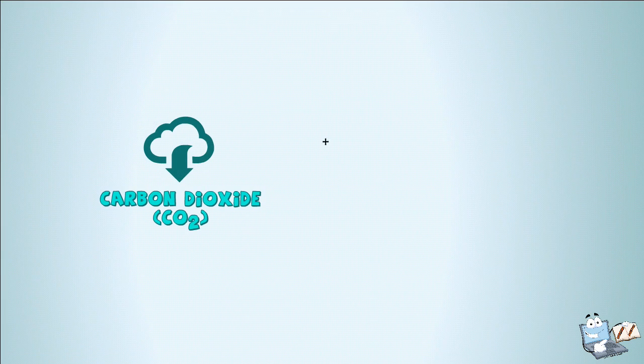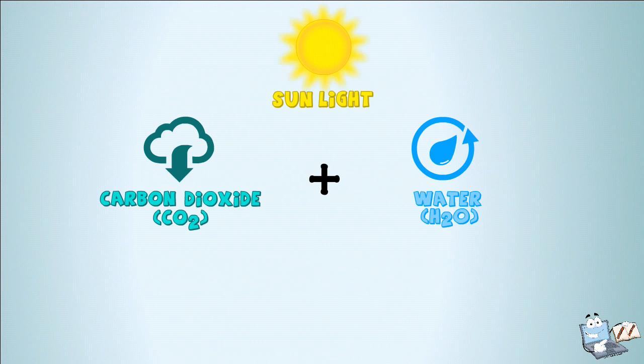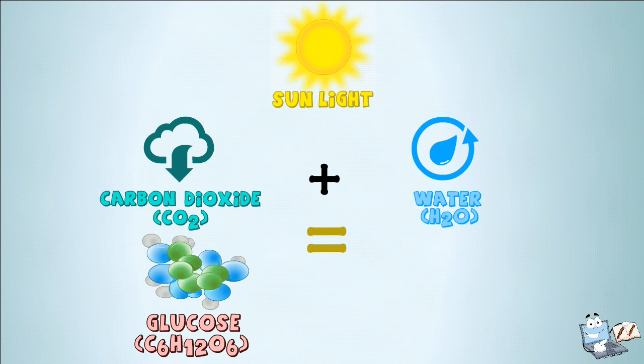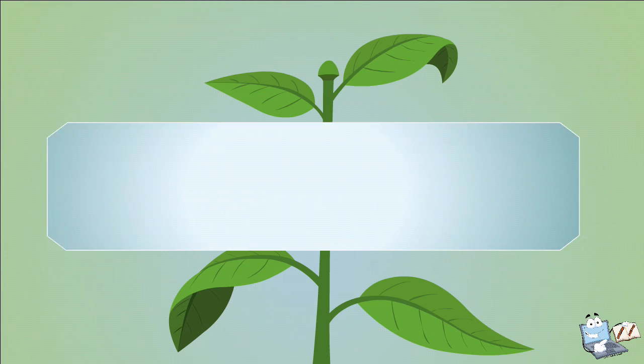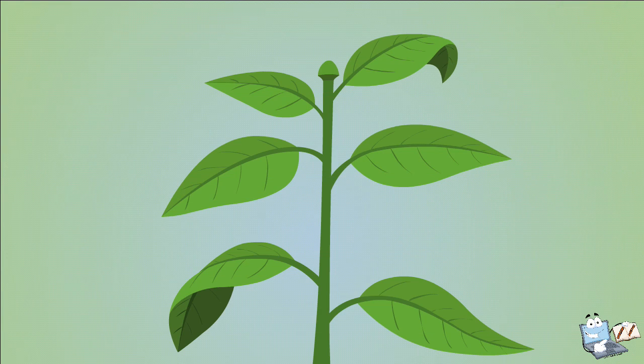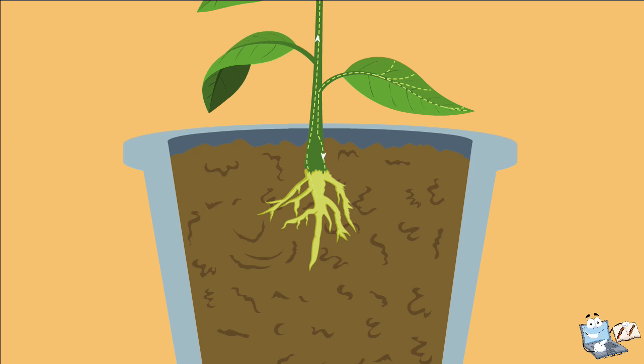So, remember: carbon dioxide plus water plus sun gives you glucose plus oxygen. The glucose, or sugar, is the food which the plant has made for itself and is distributed to all parts of the body.